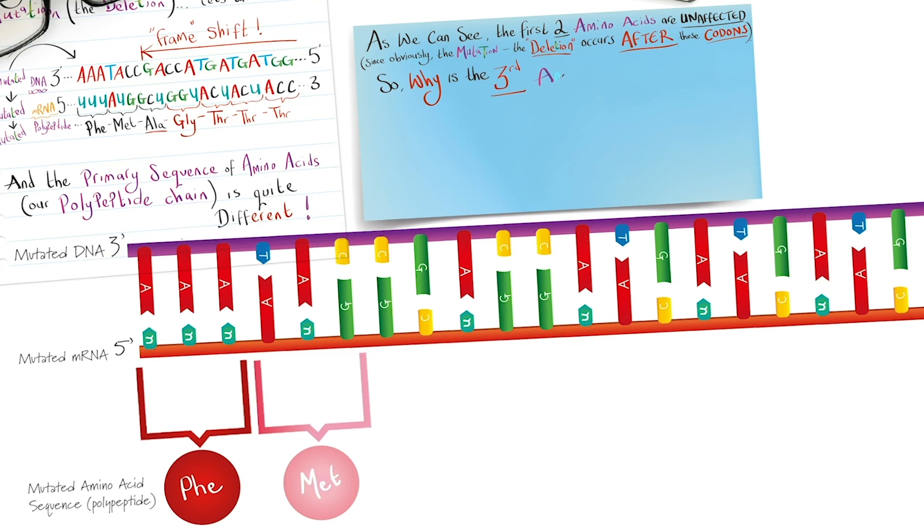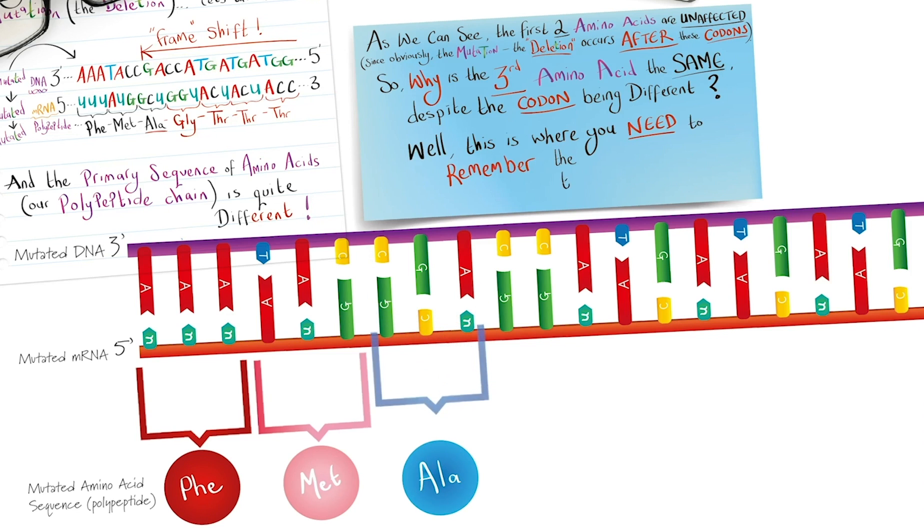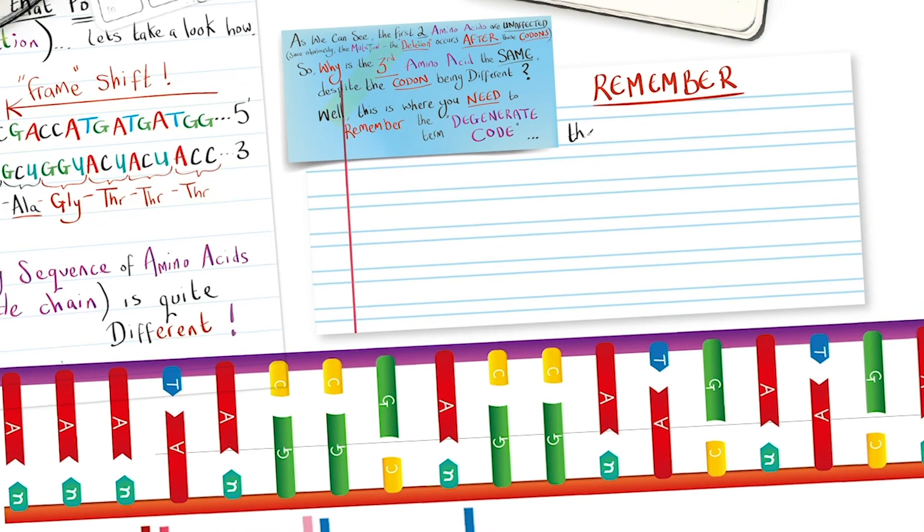So why is the third amino acid the same, despite the codon being different? Well, this is where you need to remember the term degenerate code. Remember, the degenerate code refers to DNA having more possible combinations of triplet codes, codons, than there are amino acids.